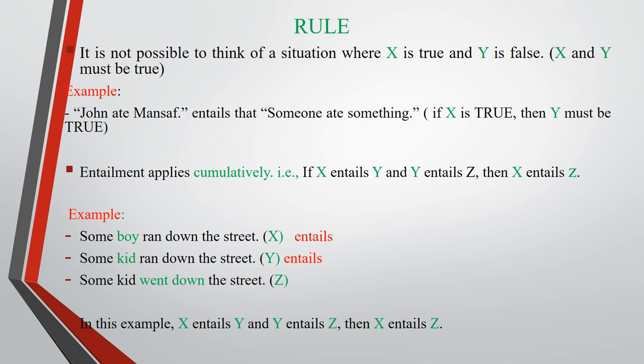Entailment applies cumulatively — i.e., if X entails Y and Y entails Z, then X entails Z. For example: 'Some boy ran down the street' entails 'Some kid ran down the street,' which in turn entails 'Some kid went down the street.' Since X entails Y and Y entails Z, then X entails Z.